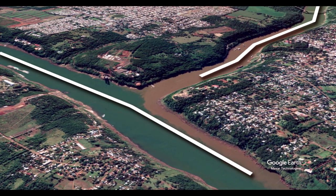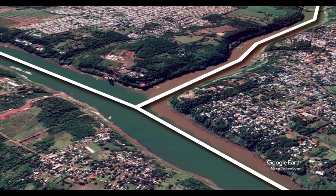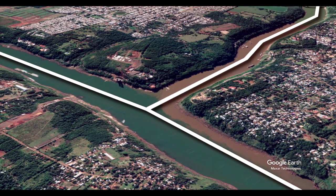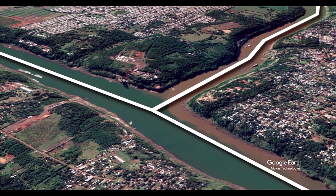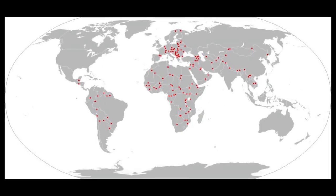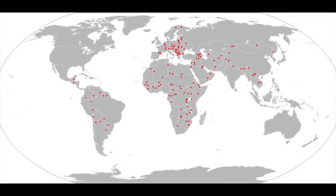Tri-points, or triple point, is a geographical feature where boundaries of three distinct regions or countries meet. Talking about countries only, there are more than 150 tri-points in our world — though this depends on the source. As many tri-points as exist, there are two in particular that intrigue me.